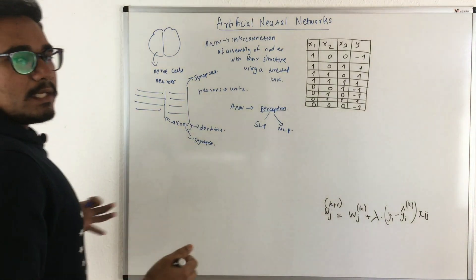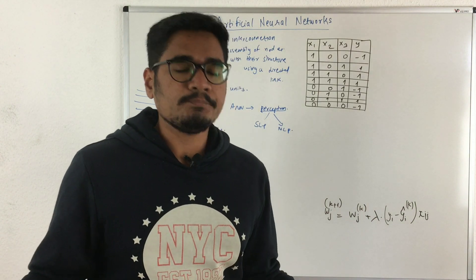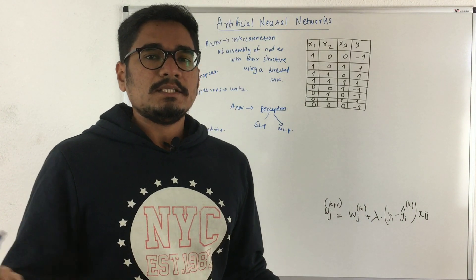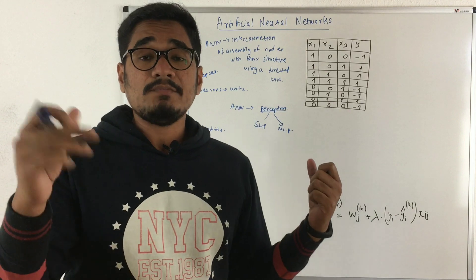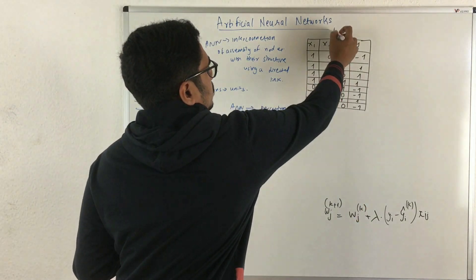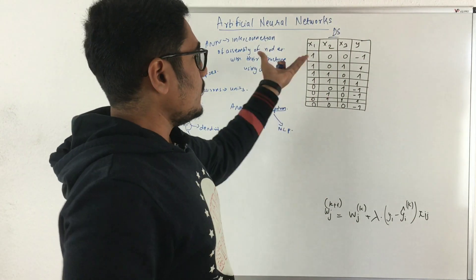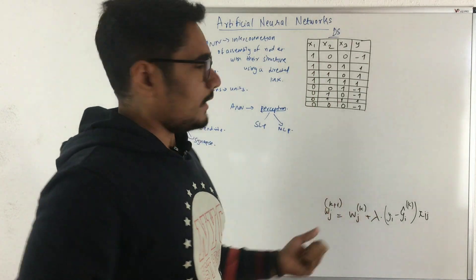Now let's understand how this artificial neural network with nodes and directed links are basically connected. For that, let's take an example of our dataset. We have a relational database management system - this is our normal dataset with n number of attributes. Here we have three attributes and one class label, y.